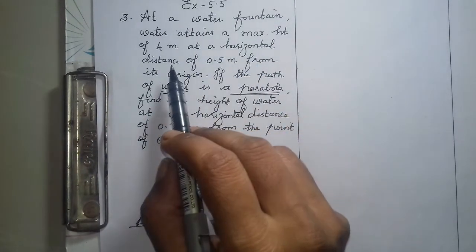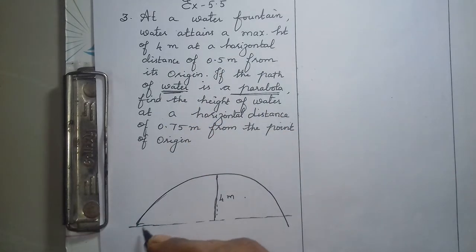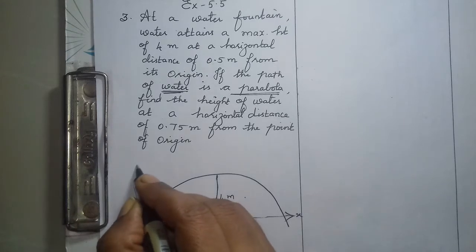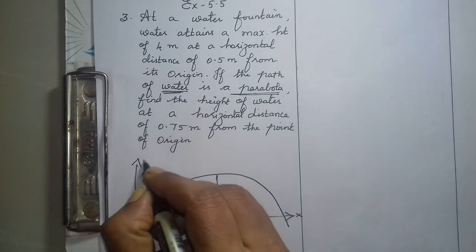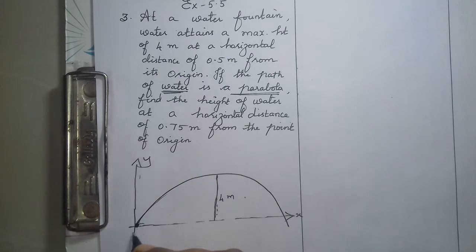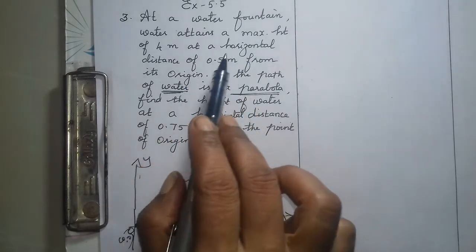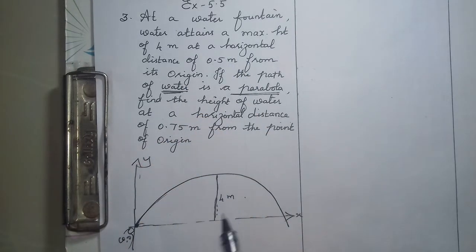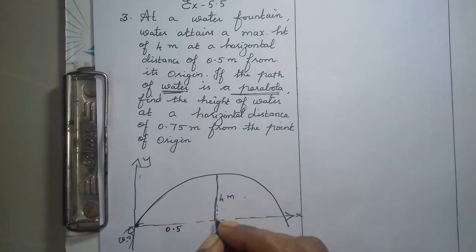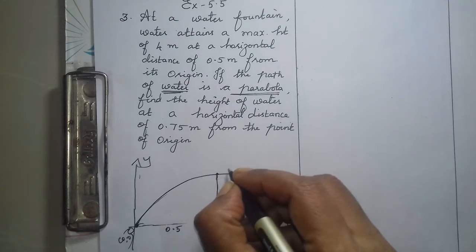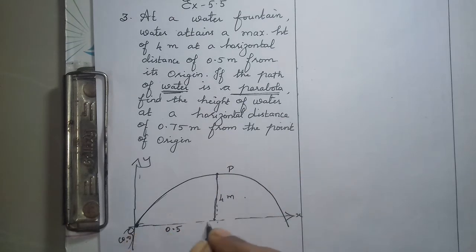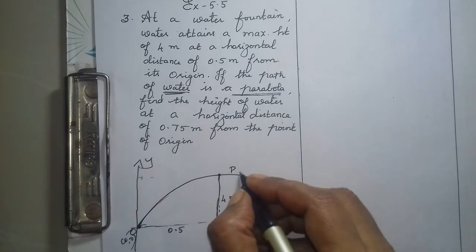At a horizontal distance of 0.5 meters from its origin — so this is the origin. Let us make this as the x-axis and draw a vertical line as the y-axis. Say this is the origin (0, 0). Now we have height 4 meters reached. The origin is 0.5 meters horizontal distance, and it reaches the maximum height of 4 meters. The horizontal distance is 0.5.